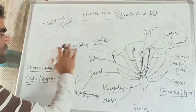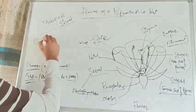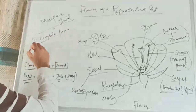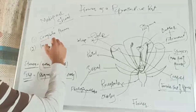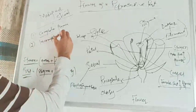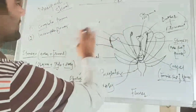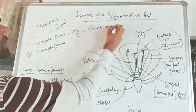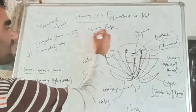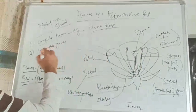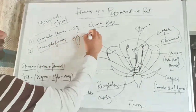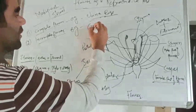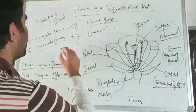Flowers are of two types: one is the complete flower and another is the incomplete flower. For example, the chana rose is a complete flower because all the whorls are present in it. So it is a complete flower. And then there is the incomplete flower.